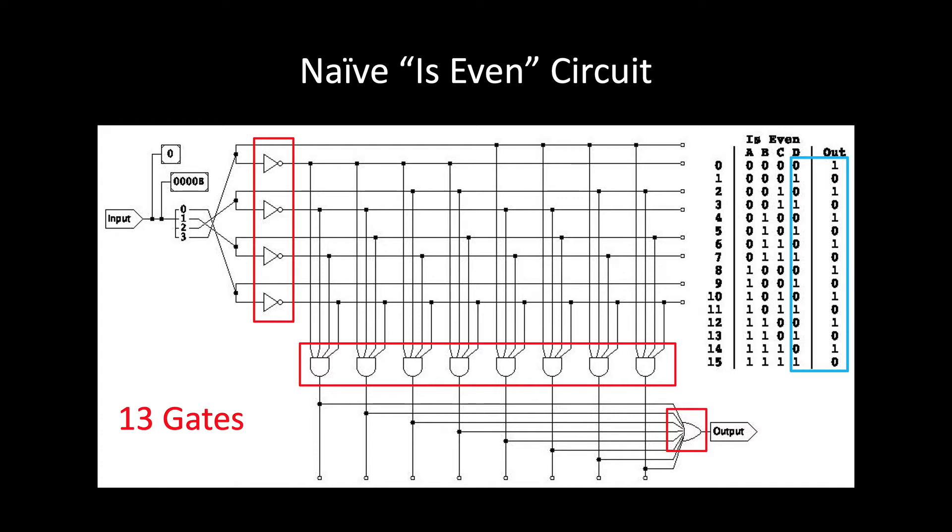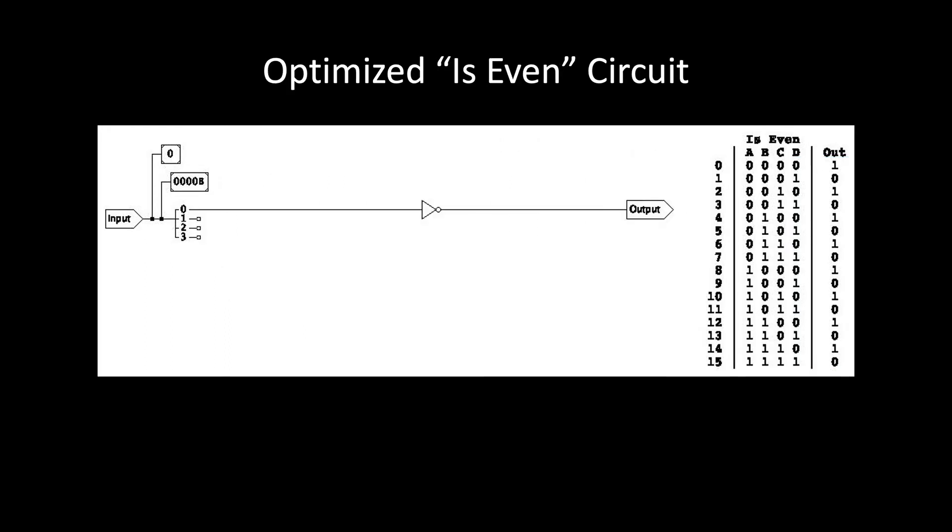That means we could also implement the circuit this way, using one gate instead of 13. Now, like I said, this is an extreme case. But it does show that circuits designed crudely using that big hammer technique often end up much larger than necessary.